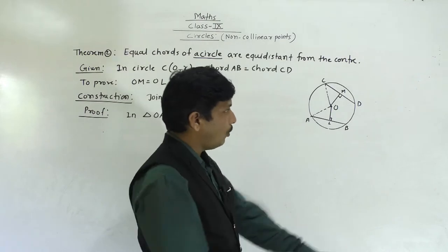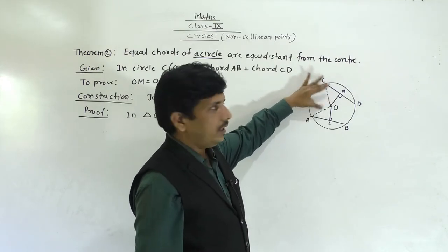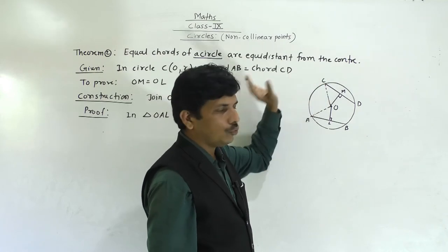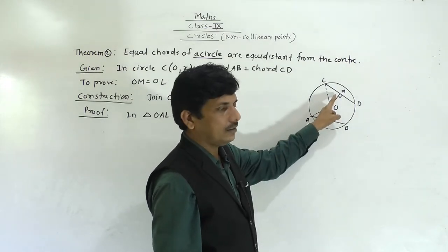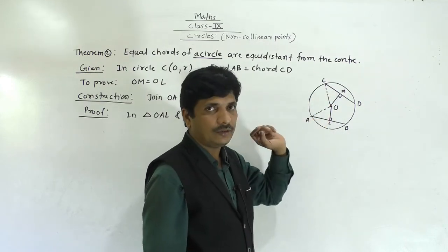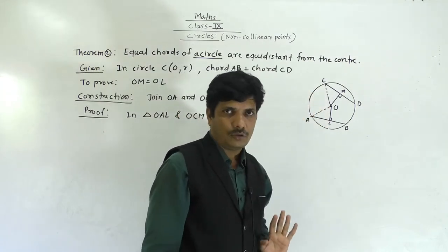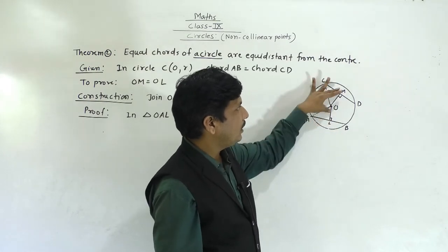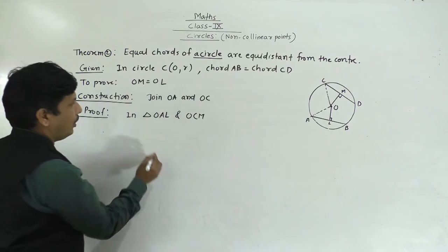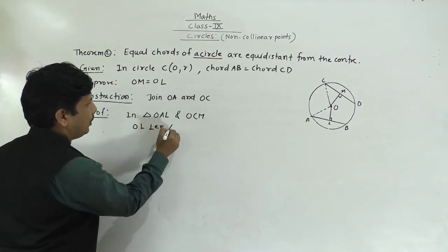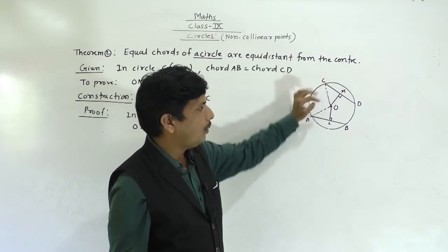In triangle OAL and triangle OCM: OA equals OC (radii of the same circle, so hypotenuses are equal), angle OLA equals angle OMC (each 90 degrees), and AL equals CM. By RHS criteria, triangle OAL is congruent to triangle OCM.